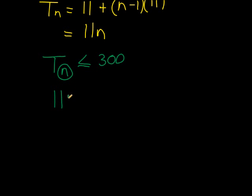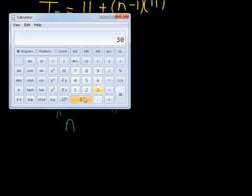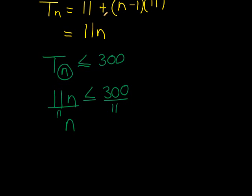So we have 11n must be less than or equal to 300. Now, when we solve for n, divide both sides with 11. And you see what the calculator tells us. 300 divided by 11 gives me 27.27. So n is less than or equal to 27.27.